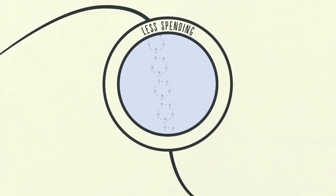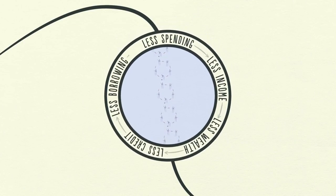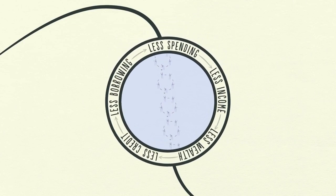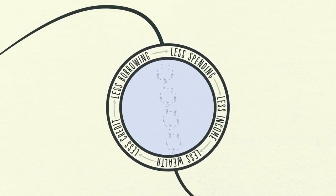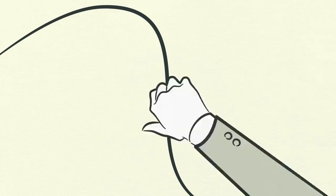People feel poor. Credit rapidly disappears. Less spending, less income, less wealth, less credit, less borrowing, and so on. It's a vicious cycle. This appears similar to a recession, but the difference here is that interest rates can't be lowered to save the day.